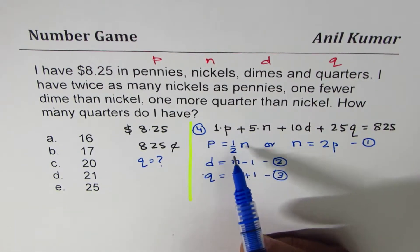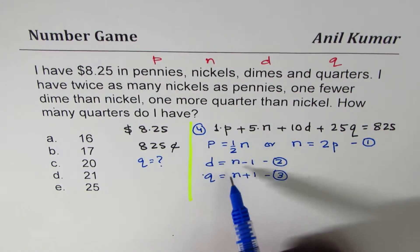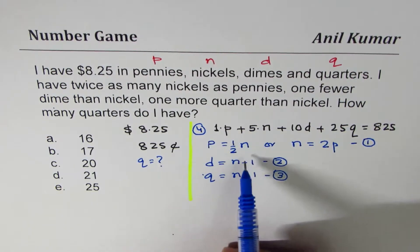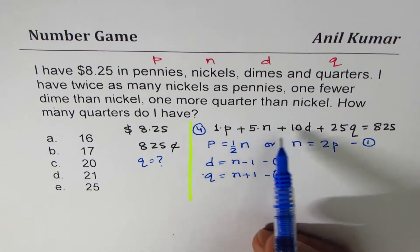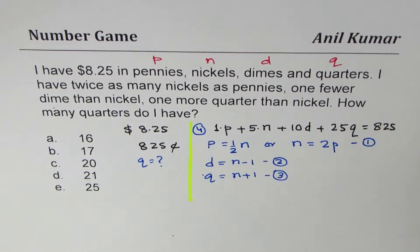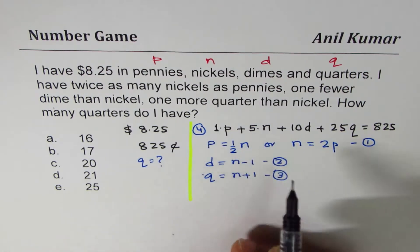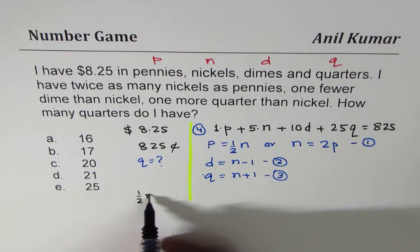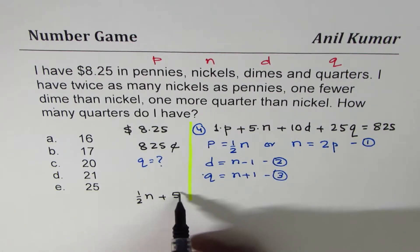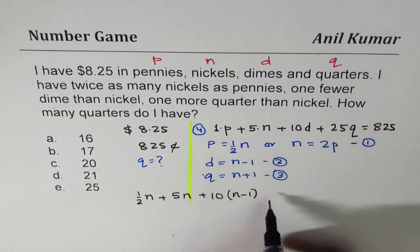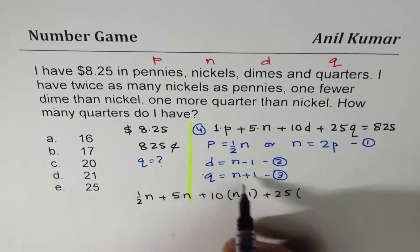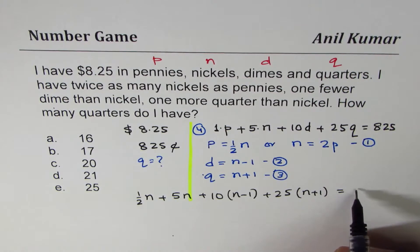The idea is we can always replace the information into the first equation. As you can see, all can be written in terms of nickels. I wrote first pennies equals to half N purposely. We can write pennies, dimes, and quarters in terms of nickels. If we do so, we get an equation only in nickels. That's the whole idea. I'll replace pennies with half N. I'll rewrite this equation. I'll write half N plus 5 times nickels, we'll leave nickels as such, plus 10 times dimes which is N minus 1, plus 25 times quarters which is N plus 1. Total is 825.